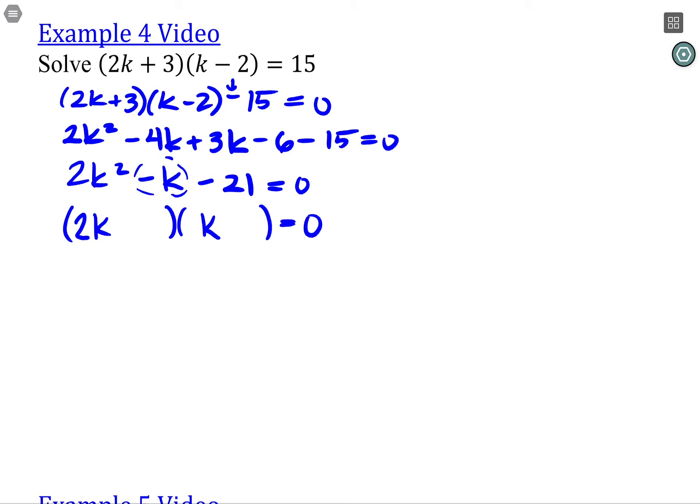I think I want the 3 and the 7. In fact, I'm going to say I want the 7 here and the 3 here, so that the inside is 7k and the outside is 6k. If I attach the minus sign to the 7, 6k minus 7k is going to be negative 1 times k, which is exactly what we want.